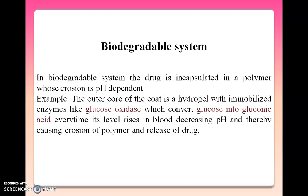Next is biodegradable systems. In biodegradable systems, the drug is encapsulated in a polymer whose erosion is pH-dependent. For example, the outer core of the coat is a hydrogel with an immobilized enzyme like glucose oxidase, which converts glucose into gluconic acid every time its level rises in the blood, decreasing the pH and thereby causing erosion of the polymer and release of drug. Various biodegradable polymers can also be used, which will erode or degrade over time, continuously releasing drug into the body.